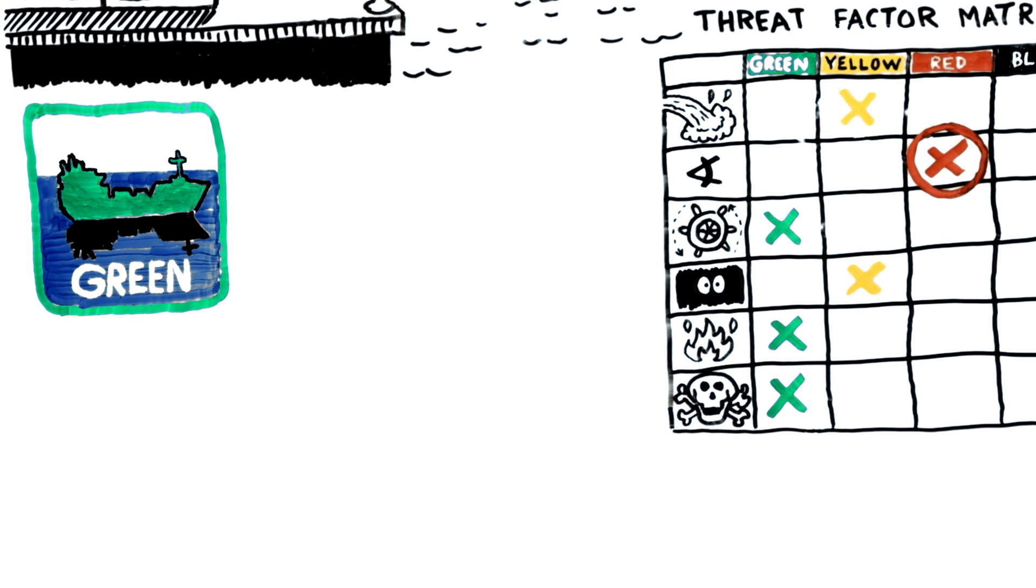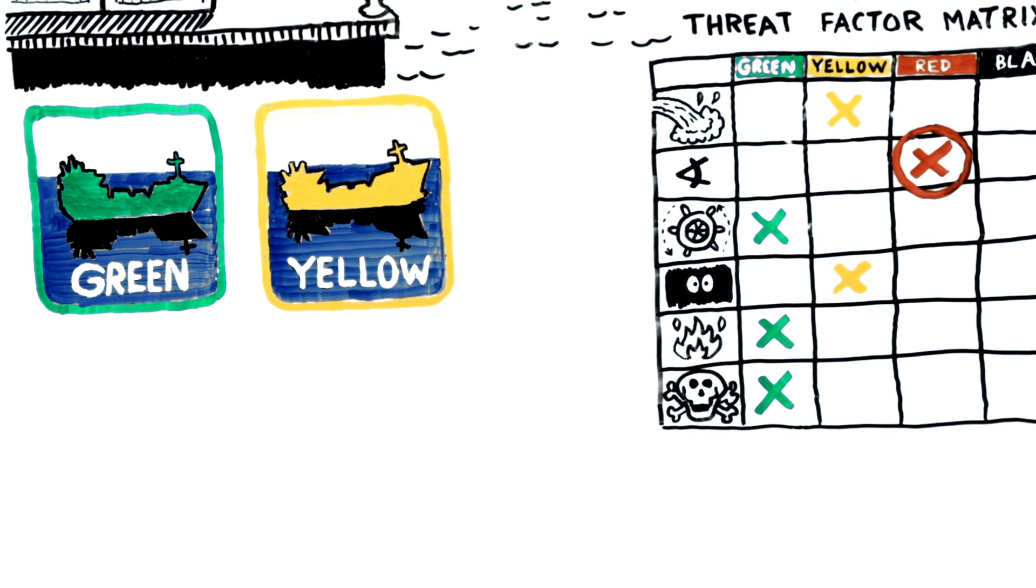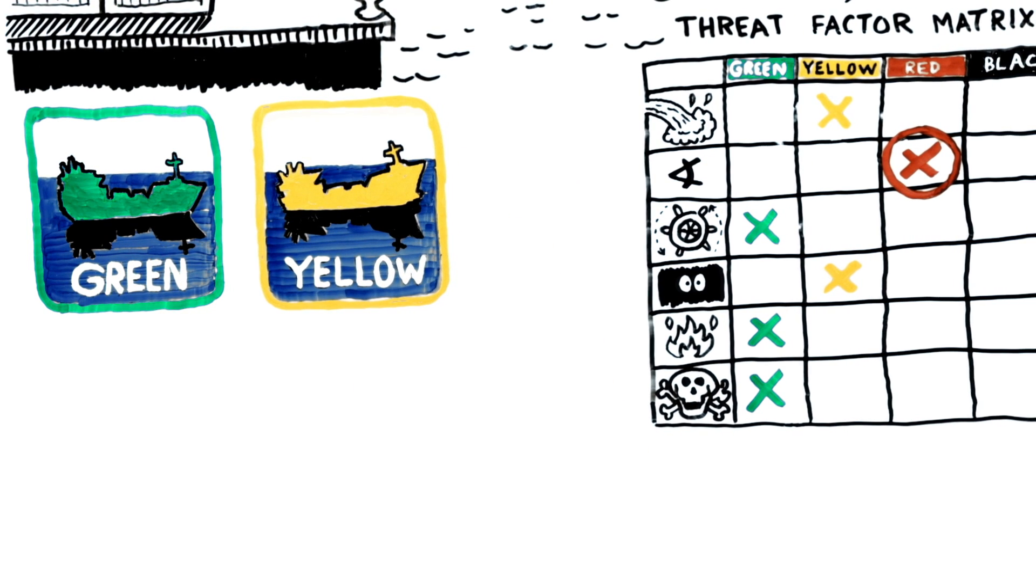Green, the vessel is safe. Yellow, the vessel is currently safe, but there is a risk that the situation will get worse.